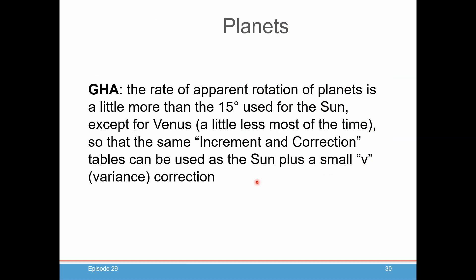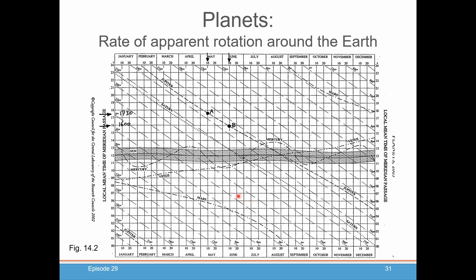Now parallax is going to be something we're going to talk much more about when we get to the Moon because it has a much larger effect on your calculations than for planets. And basically what it accounts for is the fact that these are fairly close to the Earth, and so it depends on where you are on the Earth to make these corrections. So the planets' GHA rotation is very close to that of the Sun at 15 degrees per hour. However, they are usually a little faster than the Sun. So we're going to have to correct for that. That's called the V correction or variance correction. Now Venus is a little different because most of the time it's actually slower than the Sun.